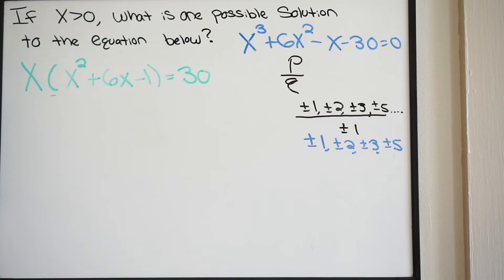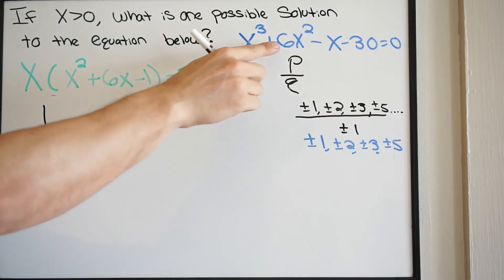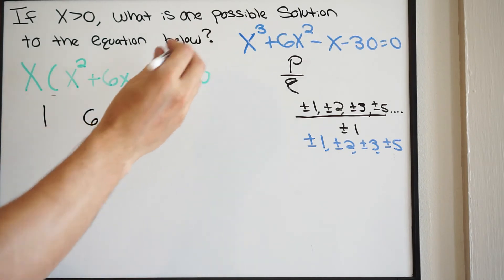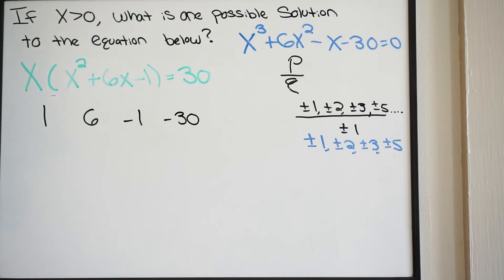Let's write out our coefficients. We're going to have a 1, a 6, a negative 1, and a negative 30. If you do synthetic division and your remainder is 0, that tells you that the root that you tested is, in fact, a root of that polynomial.